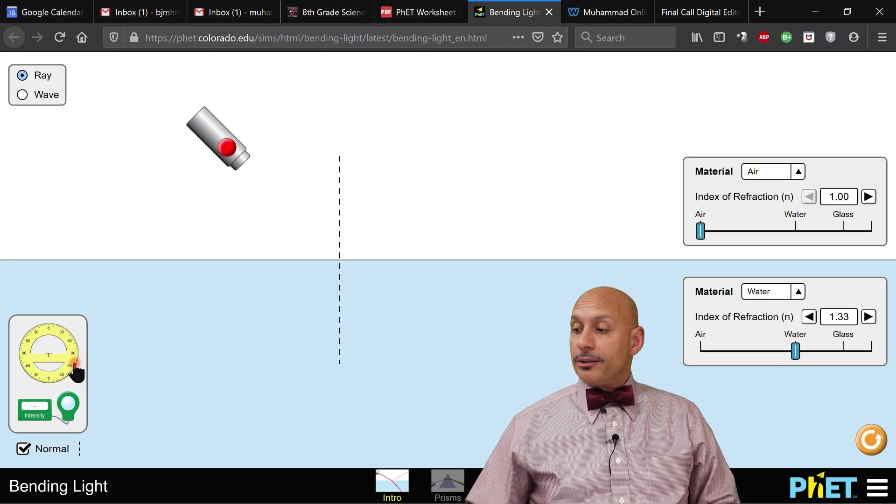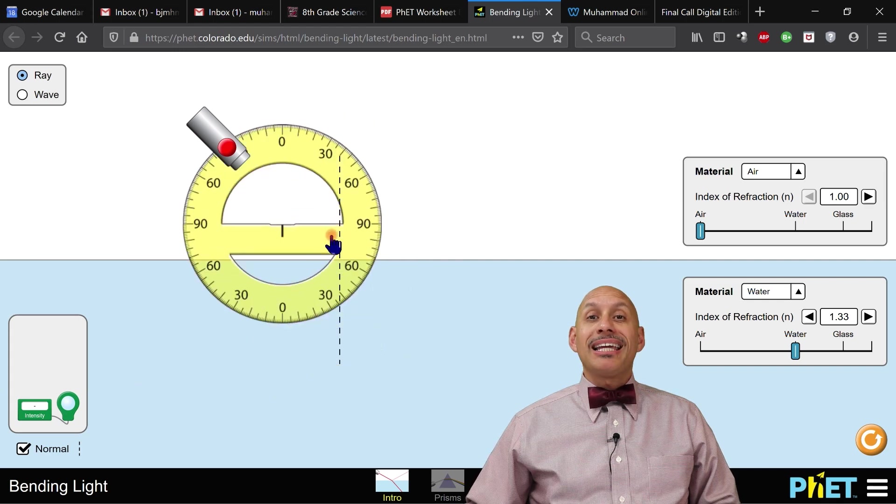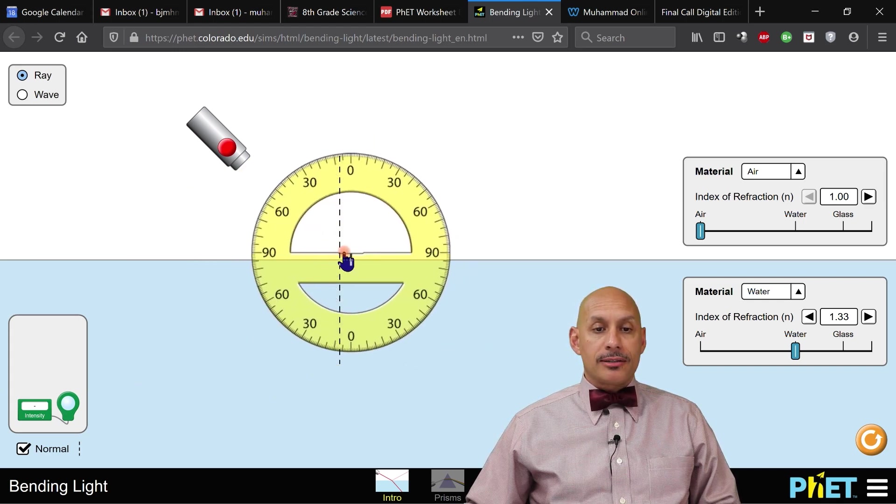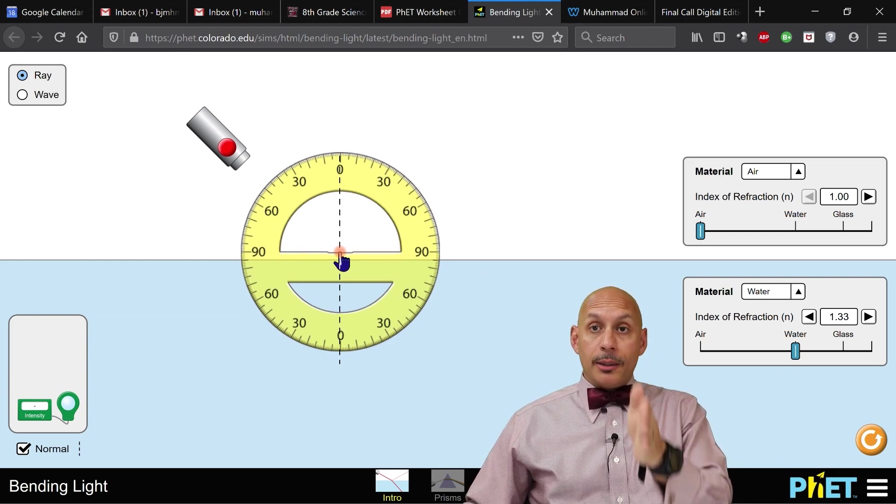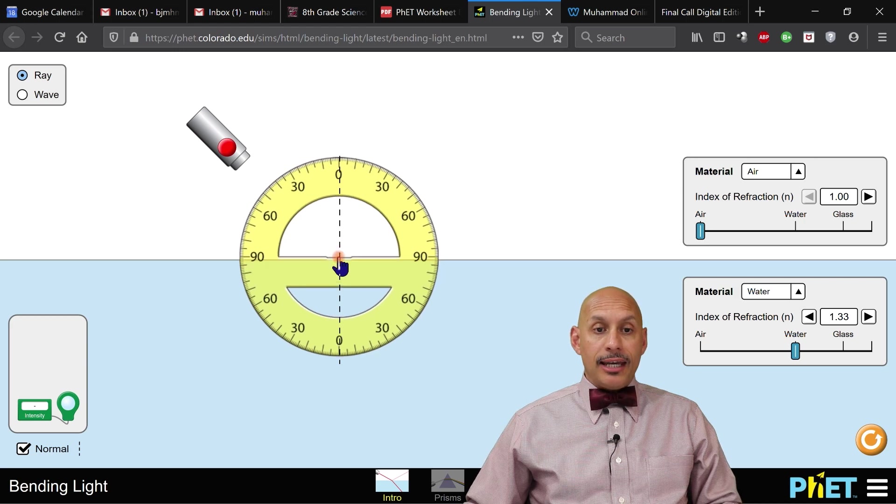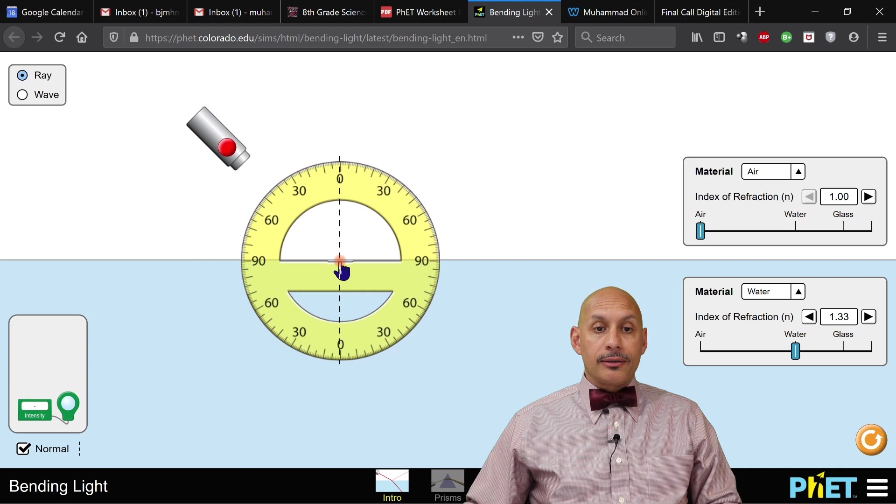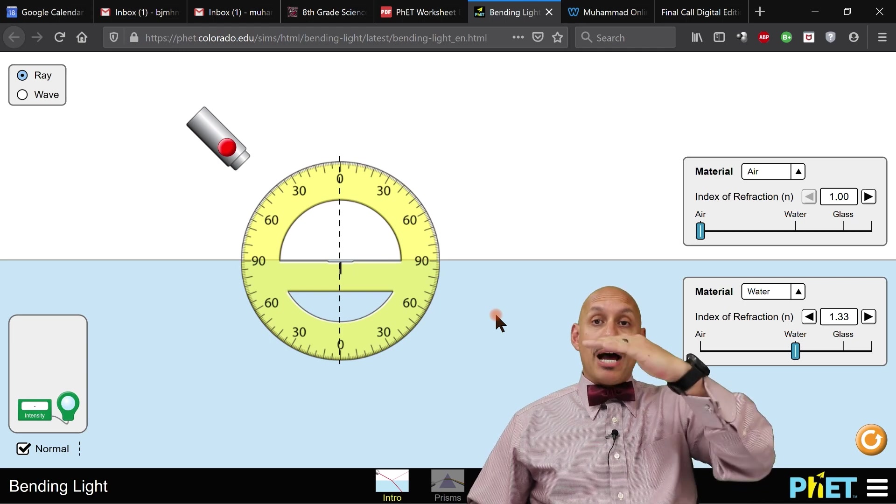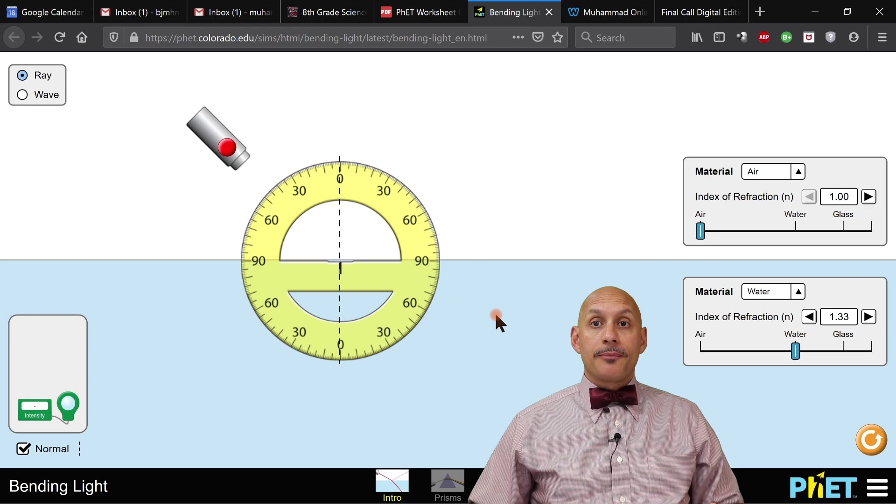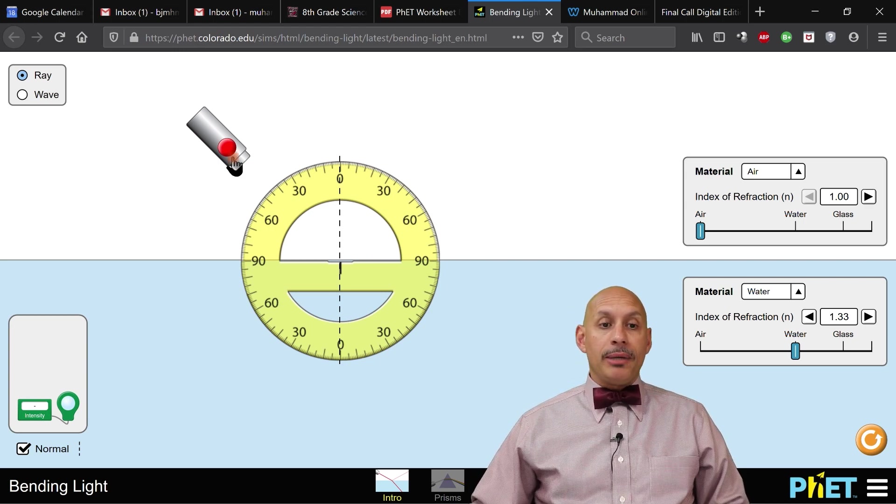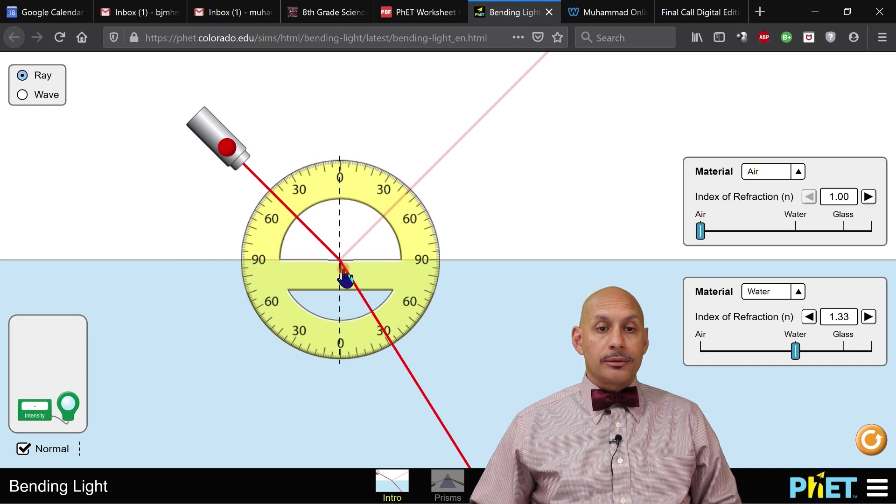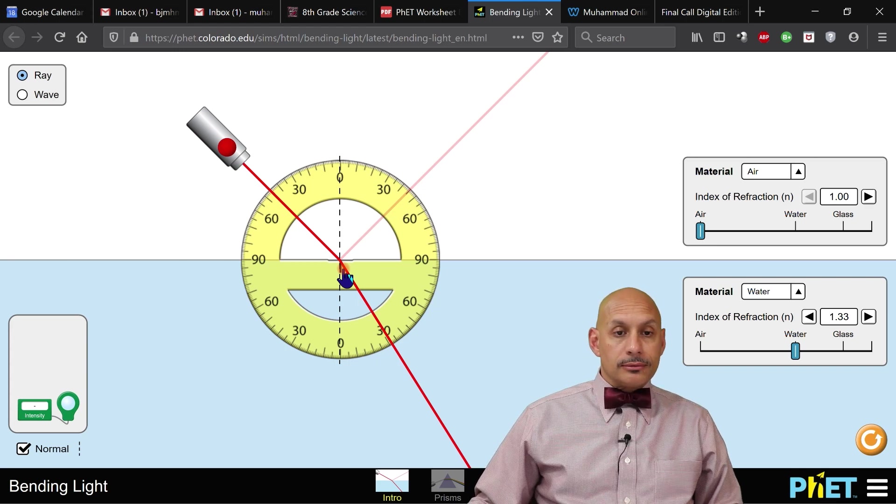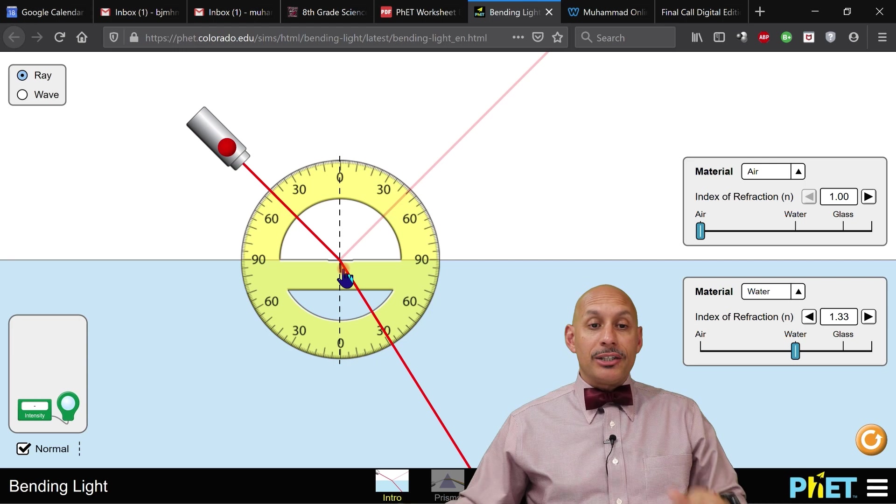Now we also need this protractor. We're going to take this protractor and place it precisely like this. We need to have the zero lined up with the normal, but then we need to drop it down so that the 90s are even with the medium, the boundary between the two mediums. You follow me? So it needs to look like that. So now when I turn the beam on, I need to adjust it just a little bit right there. All right, that looks good. So it needs to be set just like that.